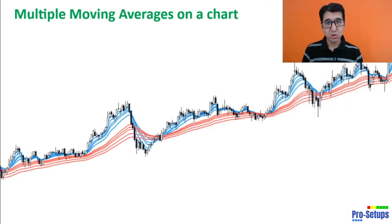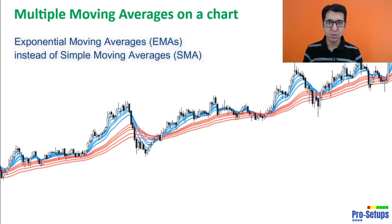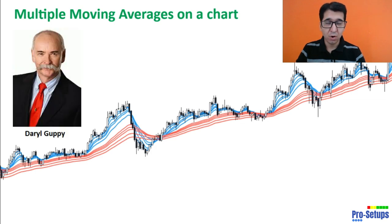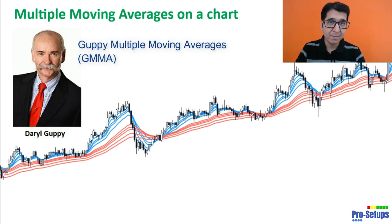The script is based on the use of multiple moving averages. In this script I have used exponential moving averages instead of simple moving averages. Thanks to Daryl Guppy, the Australian trader who gave a different perspective to the use of moving averages. Guppy Multiple Moving Averages, or GMMA as it is called, is very useful in identifying trends and locating high probability profitable entry points.